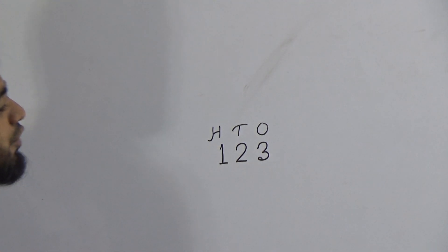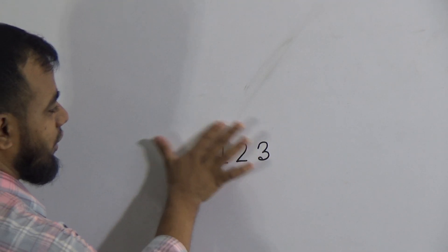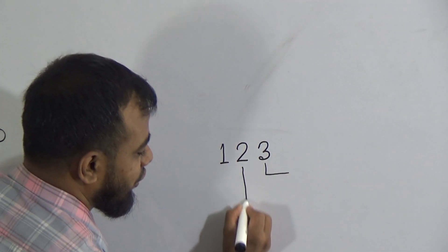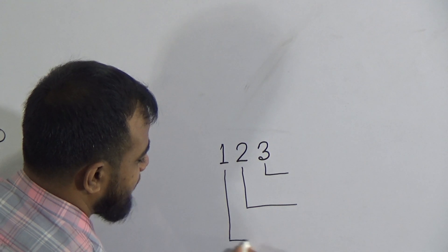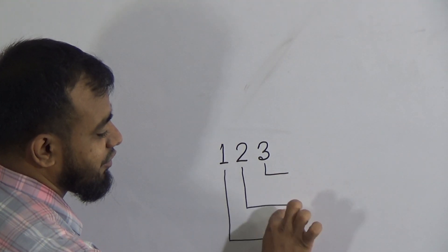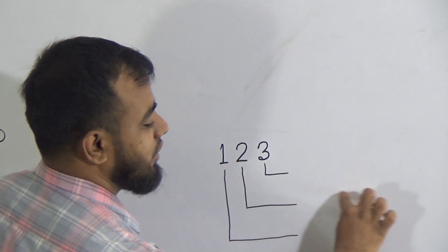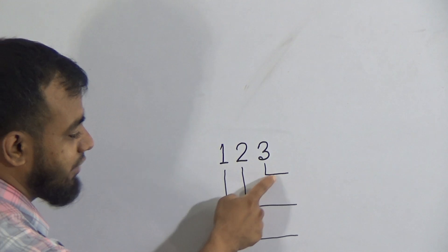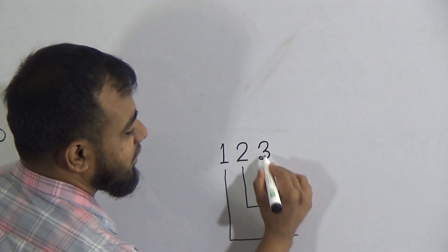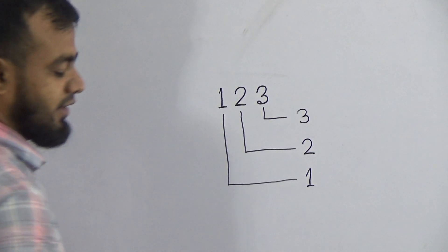Now, if you are asked to write down the place value of this number, how do we do it? It's very simple. First, we draw lines, and when we draw these lines, we must be careful about the gaps — the gaps must be large enough to write a word or sentence between the two lines. Then write the digits: 3 here, 2 here, and 1 here.